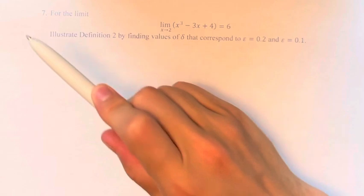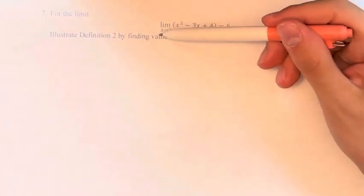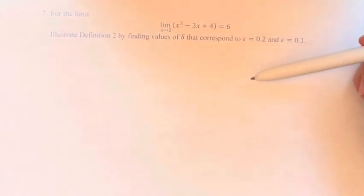Hello and welcome back to another video. In this problem, we're asked for the limit as x approaches 2 of x cubed minus 3x plus 4 is equal to 6.